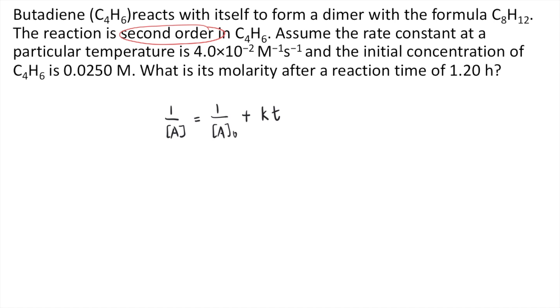Okay, so now let's plug in the values. In the problem, we are looking for the final concentration, so we don't know what the final concentration is, so just put A. We are given the initial concentration, which is 0.0250 molar, so 1 over 0.0250...